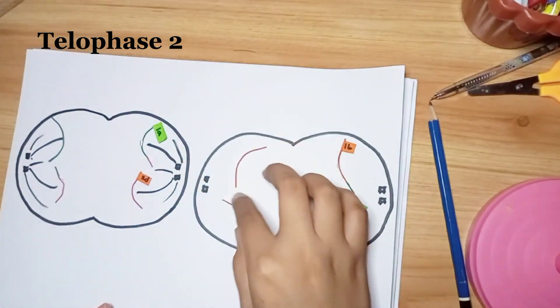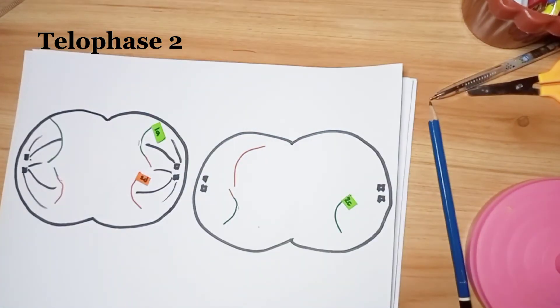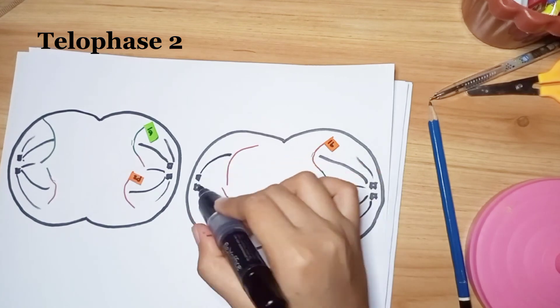In telophase II, nuclear membranes form around each set of chromosomes, and the chromosomes decondense.